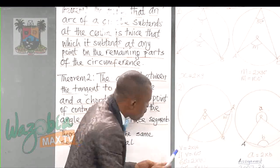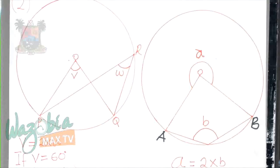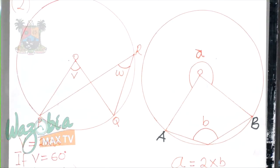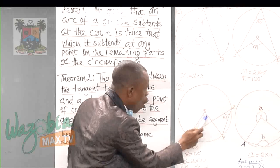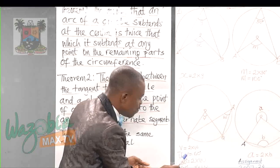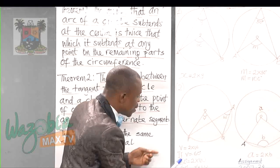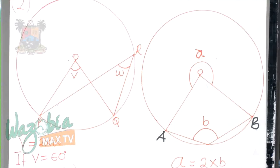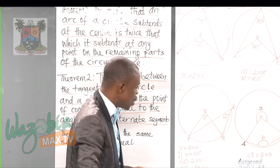You have a question here. If V is 60 degrees and you are asked to find W: we have said that the angle at the center will be twice the one at the circumference. Since V is 60 degrees, it means 60 degrees equals 2 times W. We need to make W the subject of the formula. We divide both sides by 2, giving W equals 30 degrees.